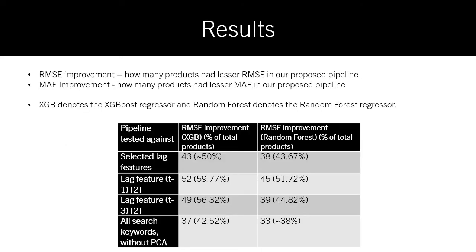After utilizing our pipeline and comparing against the benchmarks, we evaluate our results using two metrics: the Root Mean Square Error and the Mean Average Error. As you can see from this table, more than 50% of our products show improvement in terms of RMSE when we use the XGBoost model, and we also notice that the XGBoost model outperforms the random forest model.